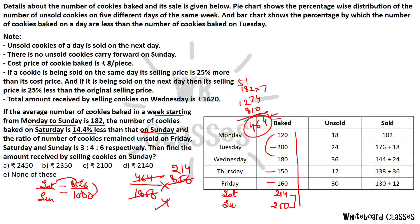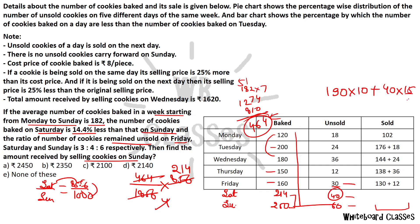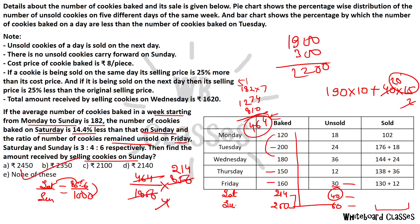The ratio of number of cookies remaining unsold on Friday is given. Find the amount received by selling cookies on Sunday: 190 fresh cookies sold at Rs. 10 plus 40 unsold cookies sold at Rs. 7.5 = 40 × 15/2 = 300. Total amount received on Sunday = 1900 + 300 = 2200. The answer is none of these. I hope you will answer all questions — thank you so much.